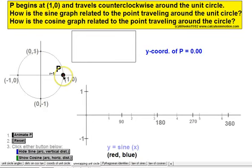On the unit circle, P begins at the point (1, 0) at an angle of 0 degrees and travels around the unit circle counterclockwise, creating one circuit in 2π radians or 360 degrees.